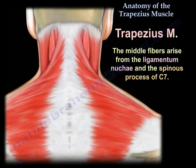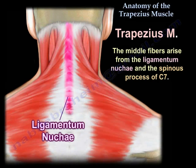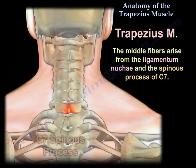The middle fibers arise from the ligamentum nuchae and the spinous process of C7.